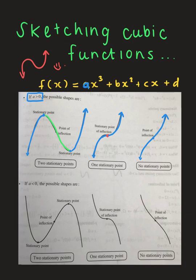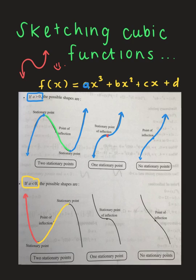If 'a' is positive, that is the orientation and shape of your graphs. If 'a' is negative — the coefficient of your x³ term is negative — when there are two stationary points, the function begins by decreasing. We get to our local minimum, then begin to increase past the point of inflection where concavity changes, reach the local maximum, and then decrease again.